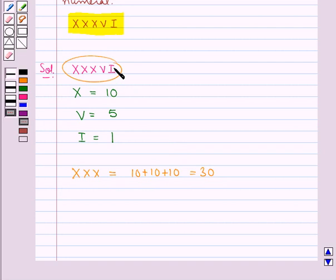Now let's see what would be the value for VI. Now V means 5 and I means 1.